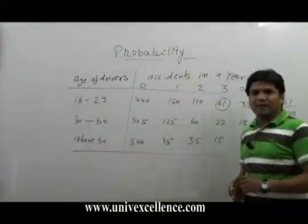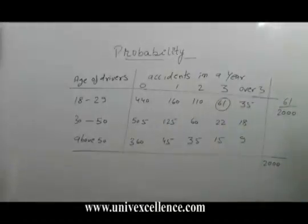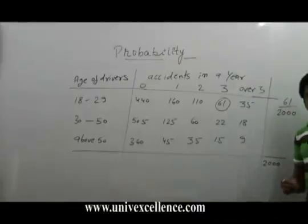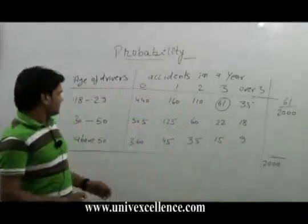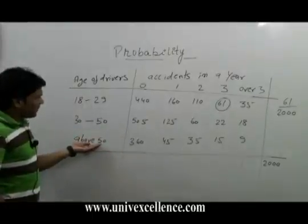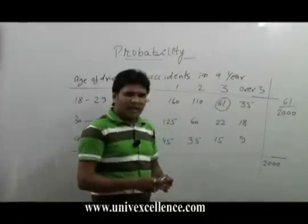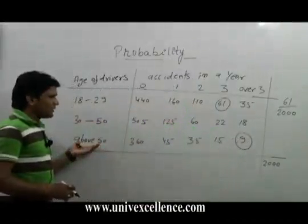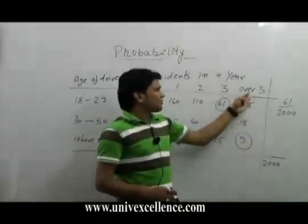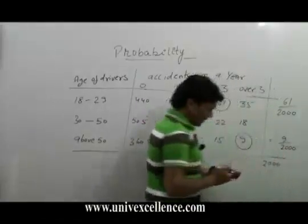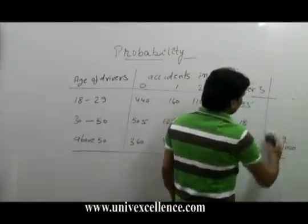What is the probability of drivers whose age is above 50 and who made an accident more than 3? There are 9 drivers which are in the age group above 50 and who met with an accident more than 3. So in this case, the probability would be 9 upon 2000.